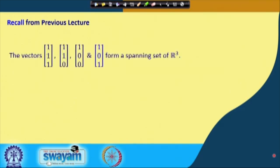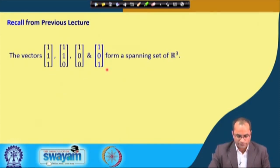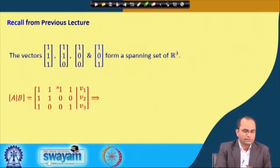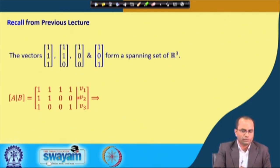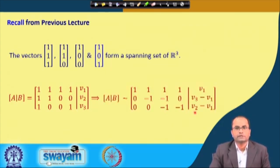Just to recall from the previous lecture, we have seen that the set of these 4 vectors — (1,1,1), (1,1,0), (1,0,0), and (1,0,1) — form a spanning set of R3. The meaning was that any element of R3 we can write as a linear combination of these 4 vectors, which we verified using an augmented matrix reduced to row echelon form.